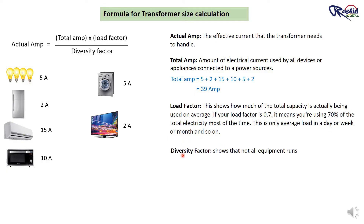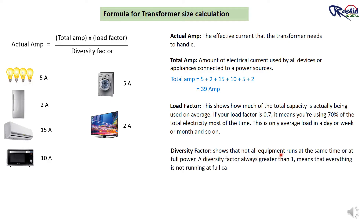Next is Diversity Factor. Diversity Factor shows that not all equipment runs at the same time or at full power. A diversity factor always greater than 1 means that everything is not running at full capacity at a time. During the day, the load in your flat changes because you don't use all your appliances at once.